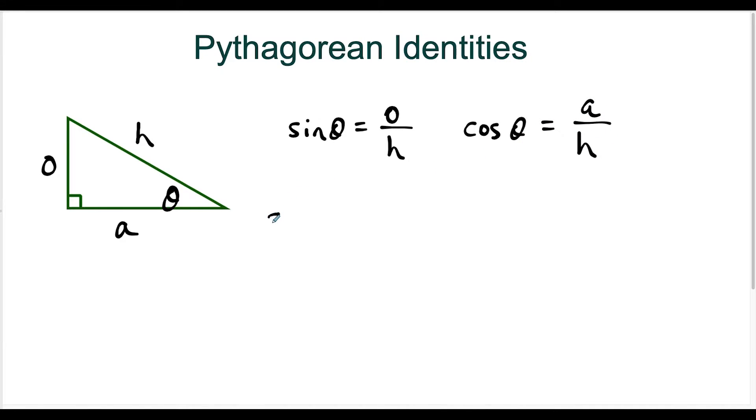And the first main trig identity that you learn of the Pythagorean identities is if you take sine squared plus cosine squared, or the other way around. If I square both of these and add them, sine squared is the same thing as opposite squared over hypotenuse squared. So I'm just multiplying this by O over H. And if I square this fraction, I'm going to get A squared over H squared. So this just represents another representation of sine squared plus cosine squared.